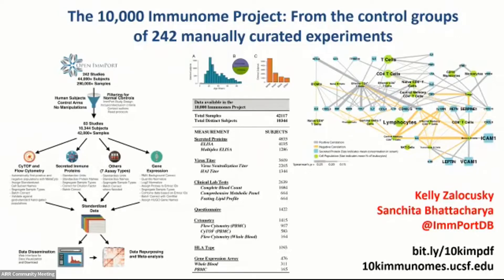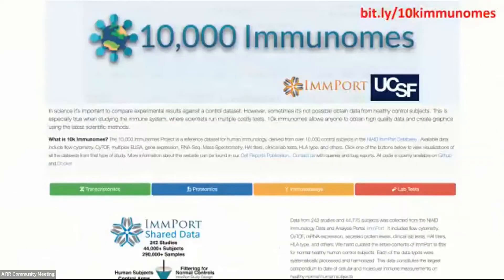We give all of this back to the community as a healthy control group that you can use. Many groups in the United States and Europe are building their own 10,000 immunome or larger repositories, and that's the right approach. But until those are done, this might serve your needs as a master control group. You can literally go to the website and click on transcriptomics, proteomes, or lab tests, and download all the raw and harmonized data in one place.